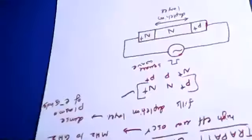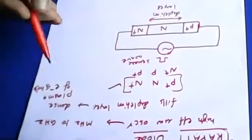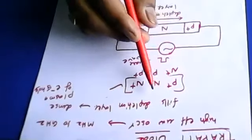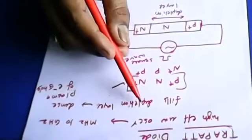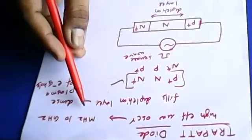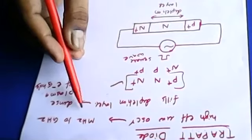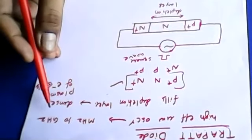This is about the TRAPATT diode, which is a high efficiency microwave oscillator being used at very high frequencies — from hundreds of megahertz up to gigahertz.